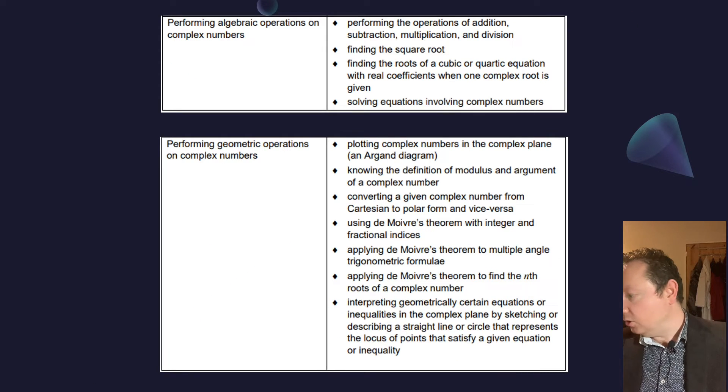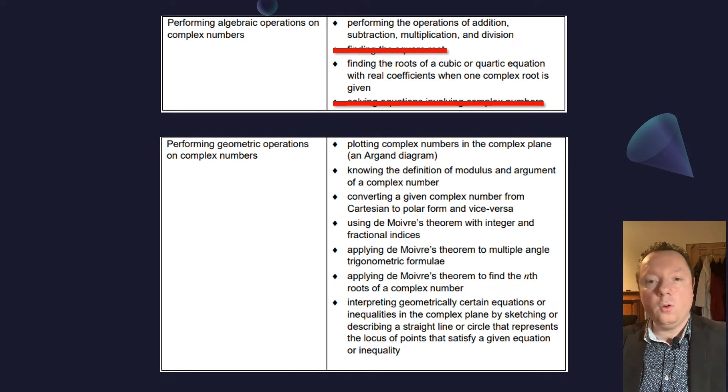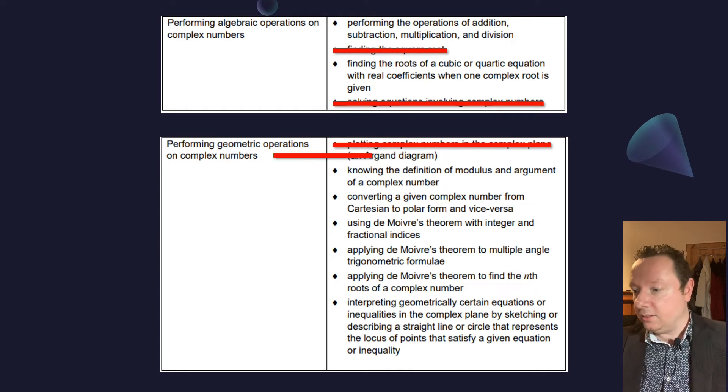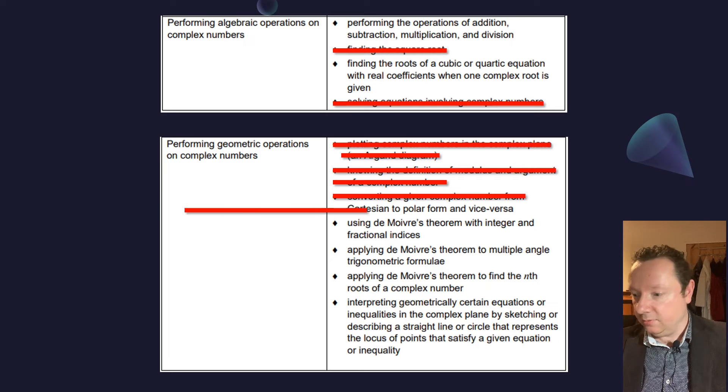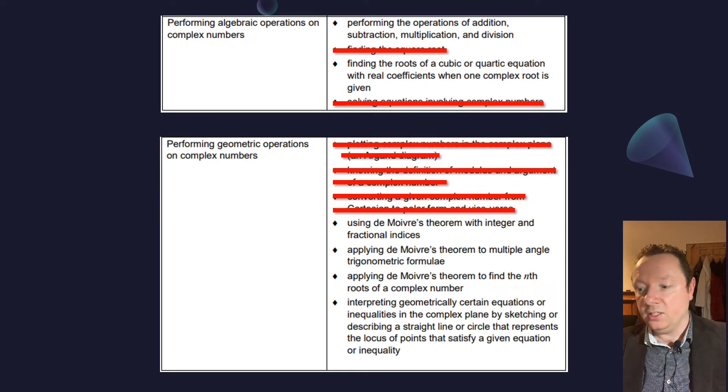Okay, complex numbers. Finding the square root is the one thing on the top that is out. Oh yes, and you won't have to solve equations using complex numbers. You won't have to do anything on an Argand diagram. You won't have to know the definition of the modulus or argument of a complex number. You won't have to convert a complex number to Cartesian form. But you do have to know De Moivre's theorem with integer and fractional indices. And you do know how to apply De Moivre's theorem.